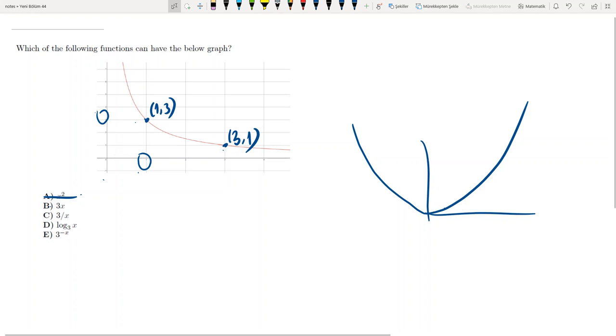3x: when x is one, 3x is three, okay. But when x is three, 3x is nine, not one. So this answer doesn't work either. 3 over x: when x is one, three over one is three, yes.